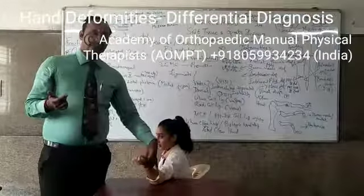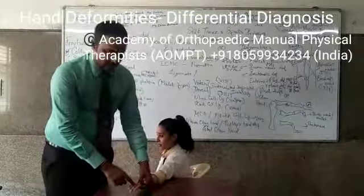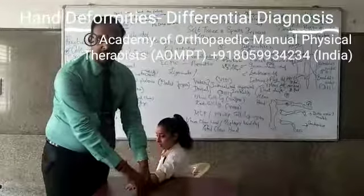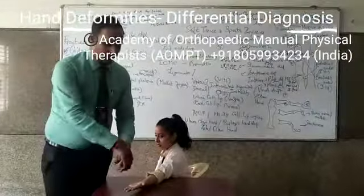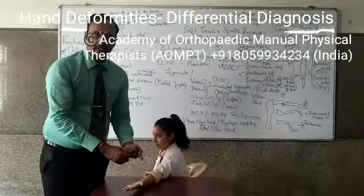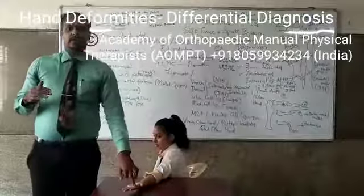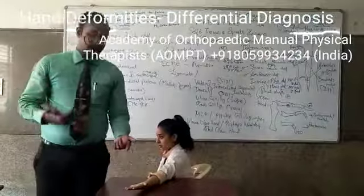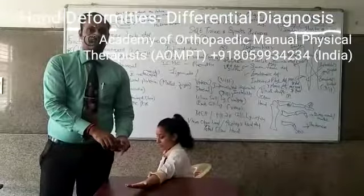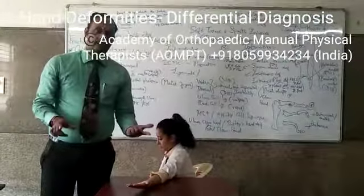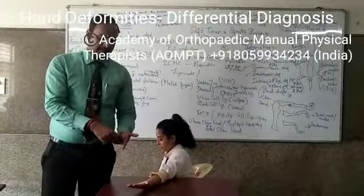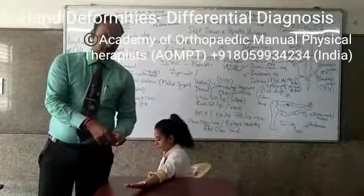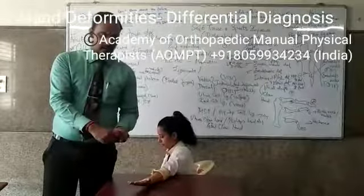Sometimes you will also find a proximal interphalangeal joint where the proximal phalanx is proper but the middle phalanx is abducted — it may be because of injury to collateral ligaments over a long period of time. A childhood injury may have caused the ligament and capsule to adapt, and in adulthood you find the finger deviated at the proximal or distal phalanx. There is no specific name for that, but these are valgus or varus instabilities at the PIP joint.